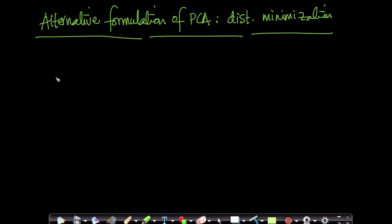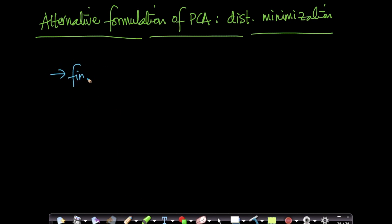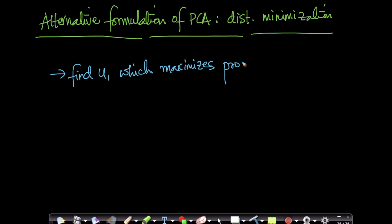We saw one formulation of PCA which was variance maximization — find U1 which maximizes projected variance. This was one formulation of PCA.